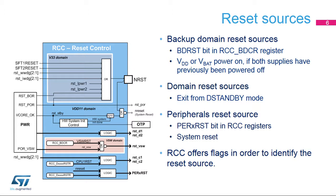A domain is in D-run mode when its bus matrix is clocked — its bus matrix will be clocked if a CPU in C-run or C-sleep mode has allocated a peripheral on this domain. A domain is in D-stop mode when its bus matrix is no longer clocked: the CPU of this domain is in C-stop mode and the other CPU is not allocating peripherals on this domain, or the CPU is also in C-stop mode. A domain is in D-standby mode when its V-Core supply is switched off. Note that it is possible to keep only the D3 domain in D-run mode while other domains are in D-standby mode. For more details on system states, please refer to the PWR training slides.